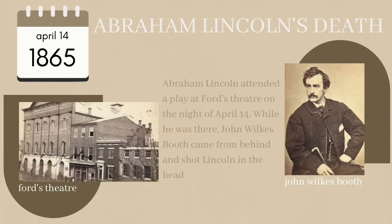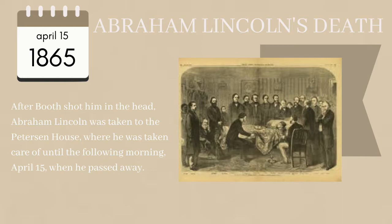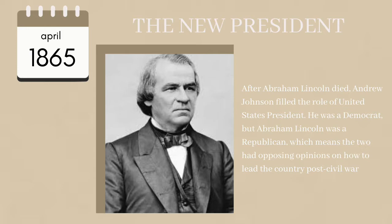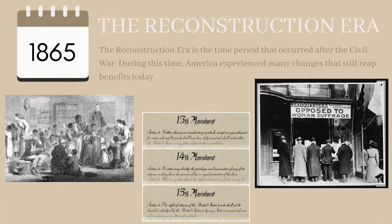Following Abraham Lincoln's death, Andrew Johnson filled the role of United States President. Andrew Johnson had very different opinions from Abraham Lincoln — mainly that he was a Democrat while Lincoln was a Republican — and therefore had different plans for the era following the Civil War. The time period following the Civil War was called the Reconstruction Era. Many decisions and movements began during this era, such as places of higher education beginning, the 13th through 15th Amendments being ratified, and the female voting rights movement beginning.